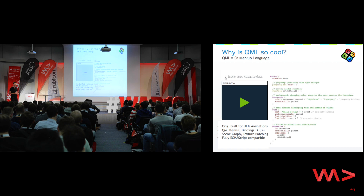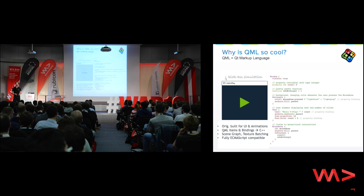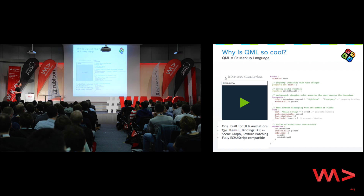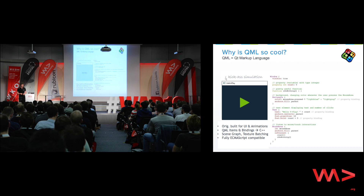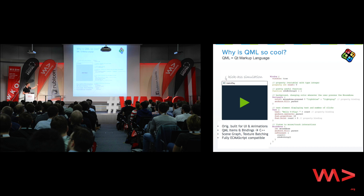For rendering, there is an OpenGL or OpenGL ES-based scene graph renderer, which does automatic texture batching to have really good performance on mobile devices. The expressions you see there are also translated into C++. Originally, QML was designed as a language for rapid UI development and rapid UI animation development. This is also something that even for designers is very easy, understandable, and readable — and you need a very small amount of code.